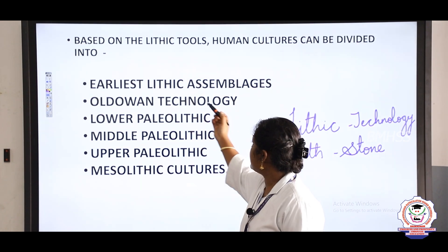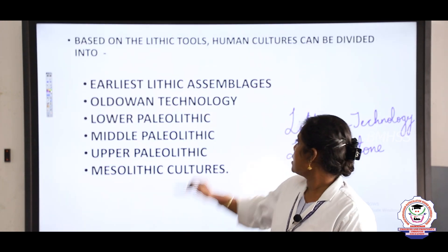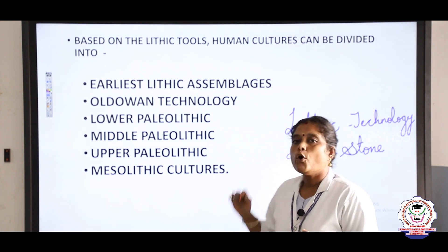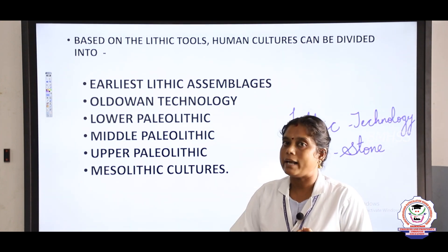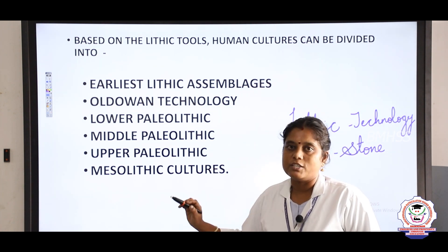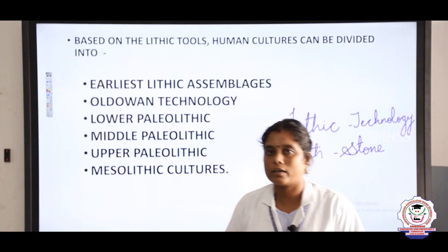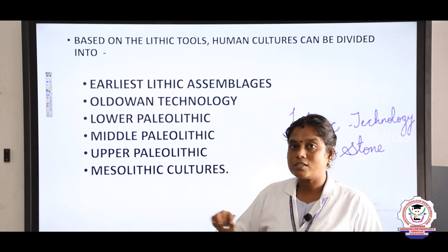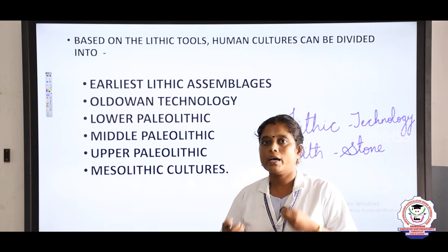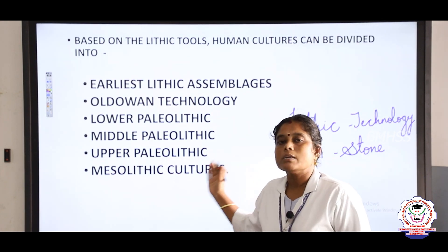The six categories based on lithic tools are: earliest lithic assemblies, Oldowan technology, lower paleolithic cultures, middle paleolithic cultures, upper paleolithic cultures, and mesolithic cultures. These are the six important categories of human cultures based on lithic tools.